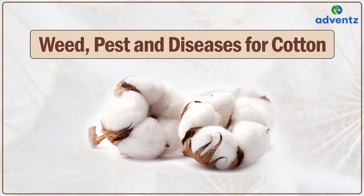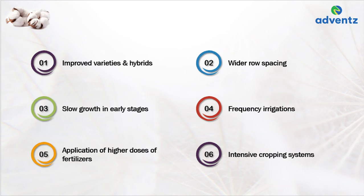In this module, we will study weed, pest and diseases for cotton. The introduction of improved varieties and hybrids, adoption of wider row spacings, slow growth in early stages, coupled with frequent irrigations, application of higher doses of fertilizer and intensive cropping systems predispose the cotton crop to heavy infestation of weeds, as these provide very congenial conditions for weed growth.